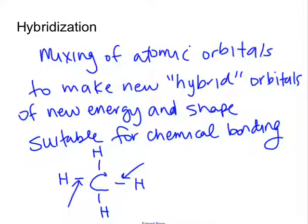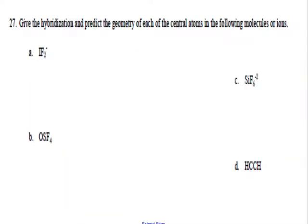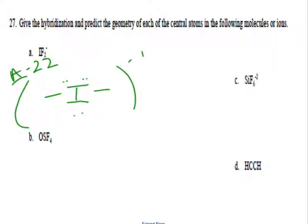Now let's look at some structures and apply this. For the first example, the central atom has five areas, so the hybridization is sp3d. Electronically it's trigonal bipyramidal, but geometrically in space it's linear because of lone pairs. For OSF4 — sulfur in the middle surrounded by four F's and one oxygen, with 48 electrons available — we again have five areas, so it's still sp3d, but this one is geometrically trigonal bipyramidal.